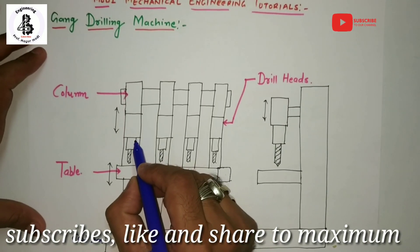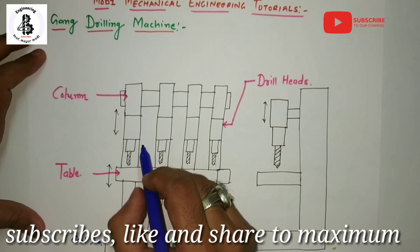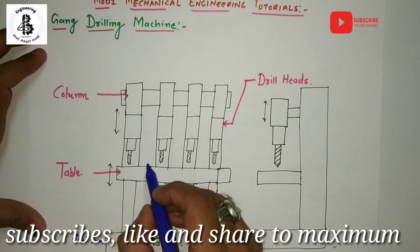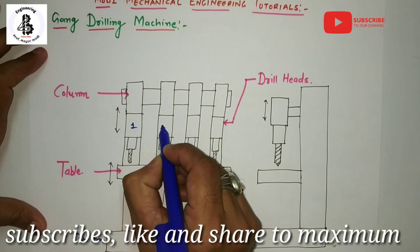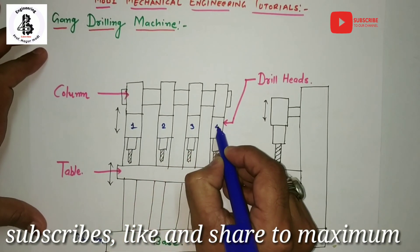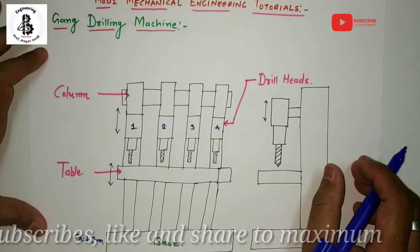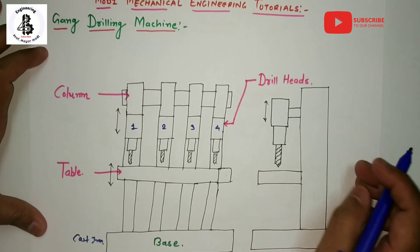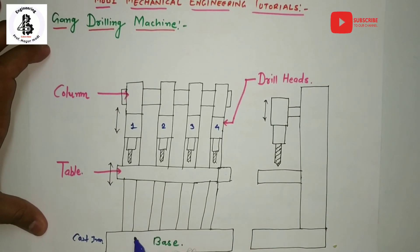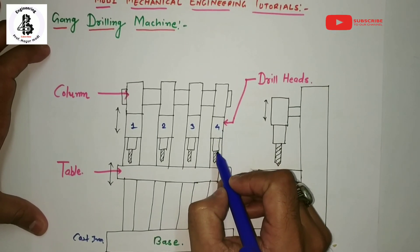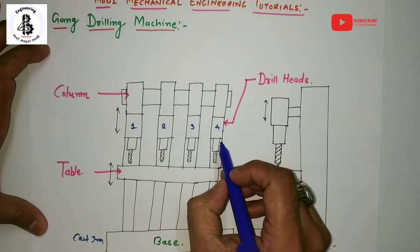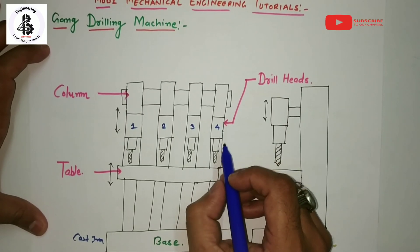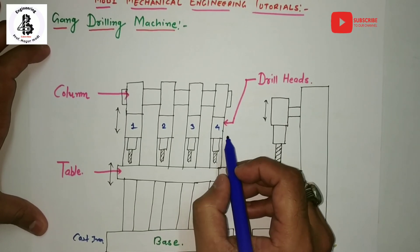In a gang drilling machine, 4 to 6 spindles are mounted side by side. As you can see in the figure, 4 spindles are mounted onto the horizontal column, and each spindle has a separate drill head.